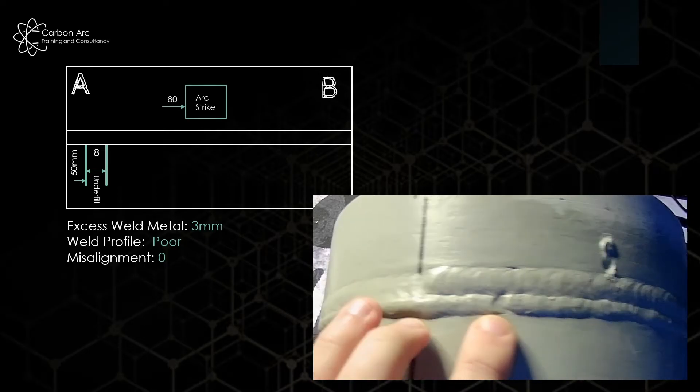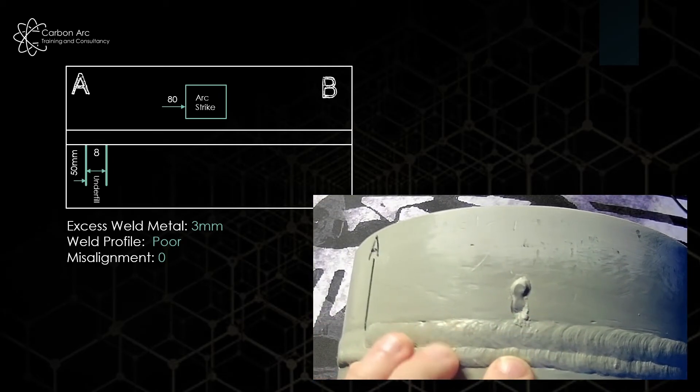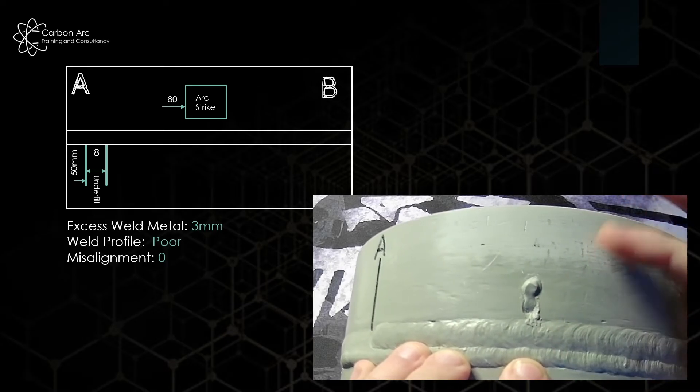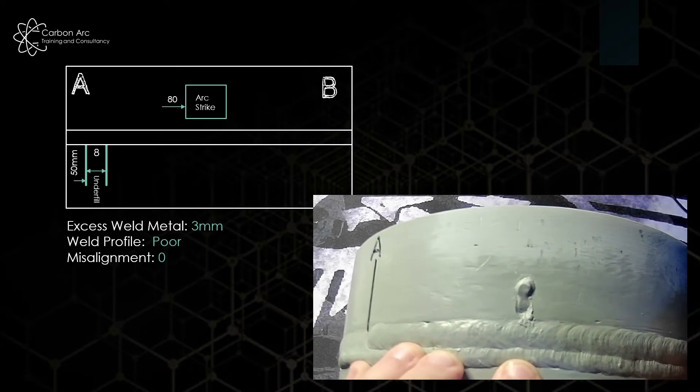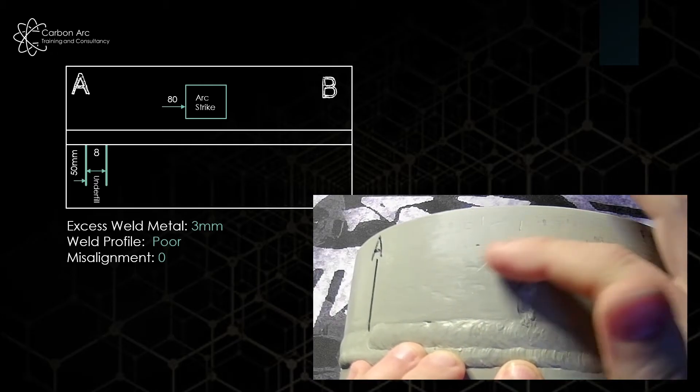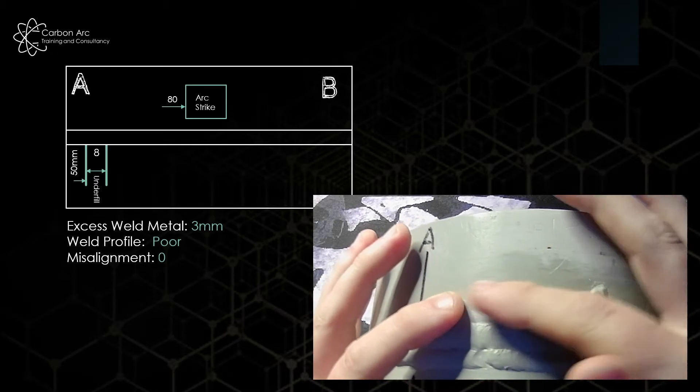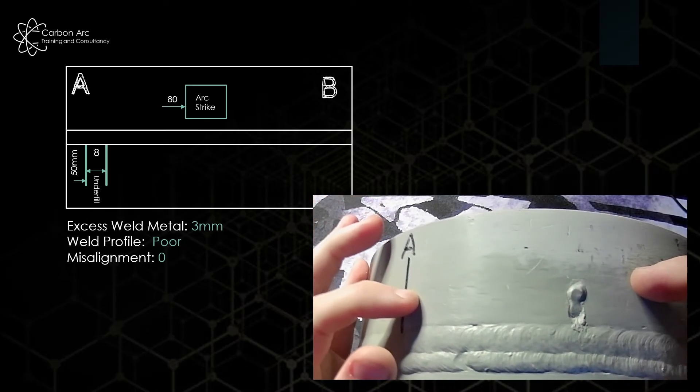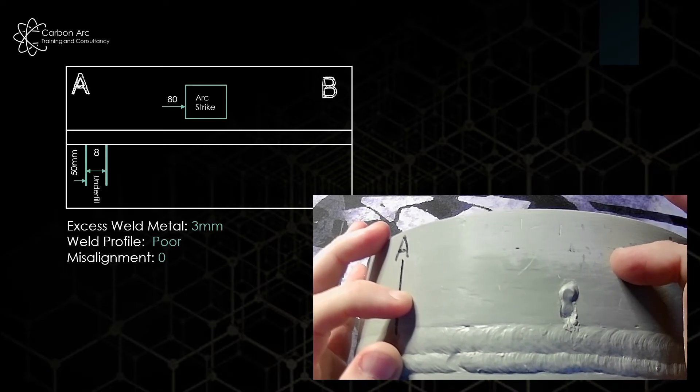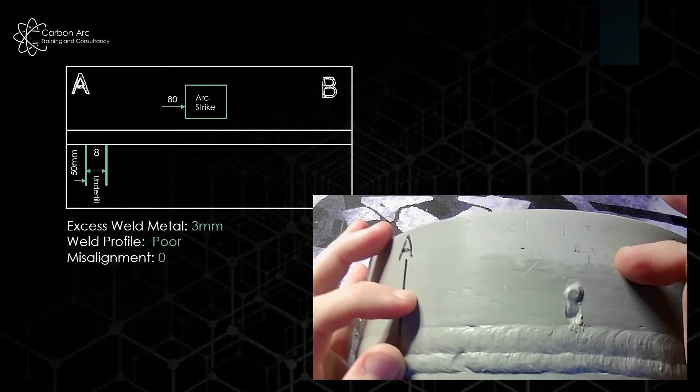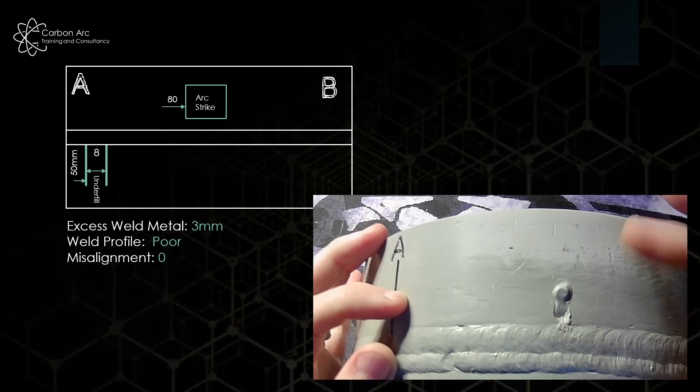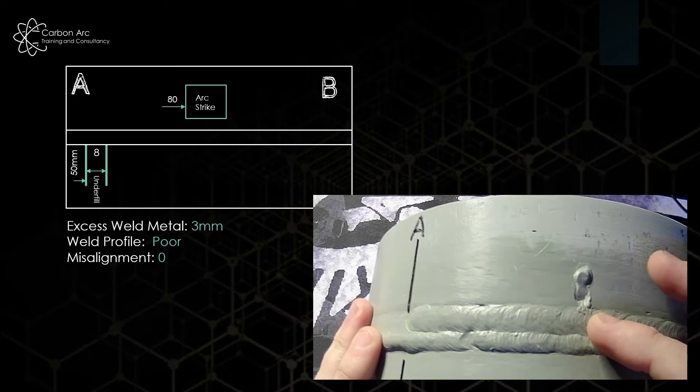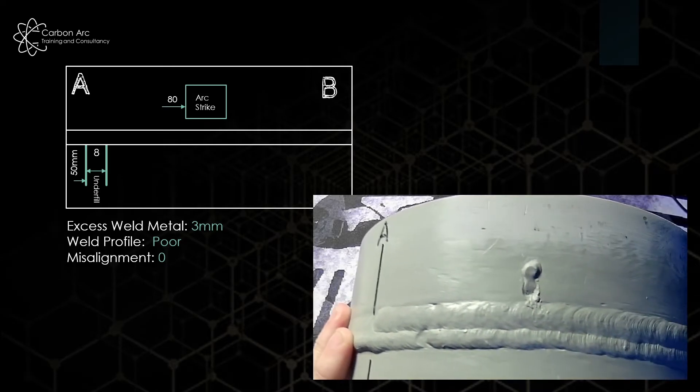Now, I move along, and we can see here we've got an arc strike. Because this is off of the body of the weld itself, and it's in the parent material, I can do this where I just draw a box around its location, measure from my datum, which I'm saying is 80mm, and just write arc strike in it. It's likely that any acceptance criteria you're using during your exam will be more about locations of things like arc strikes and mechanical damage. So that is enough information to be able to pull up and accept or reject.